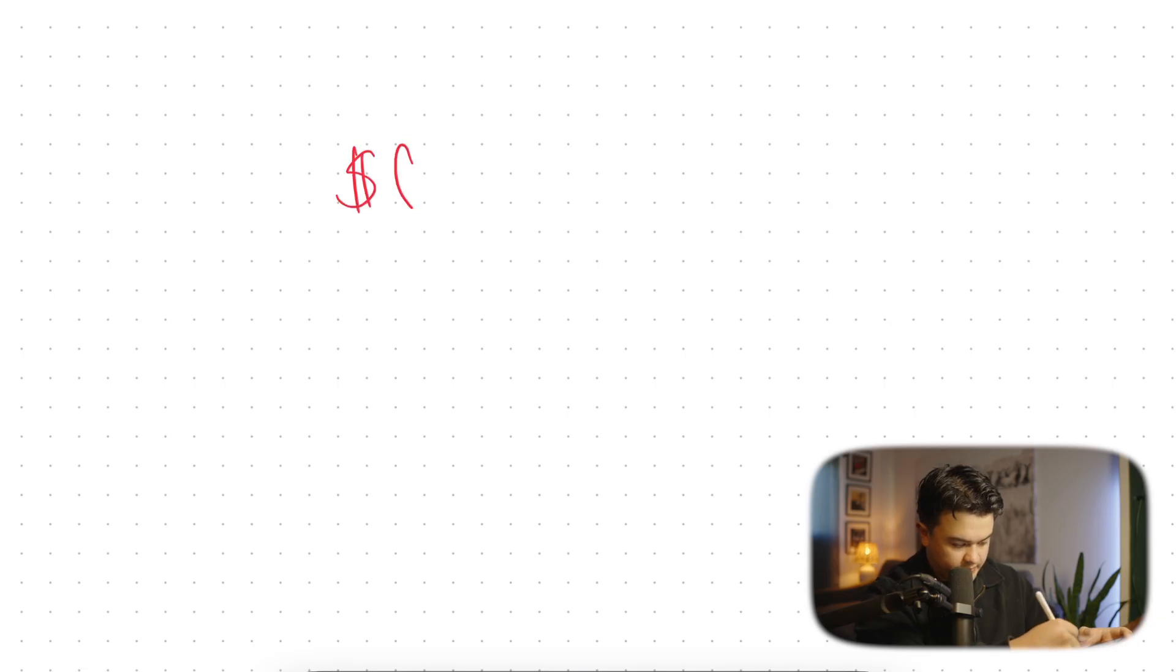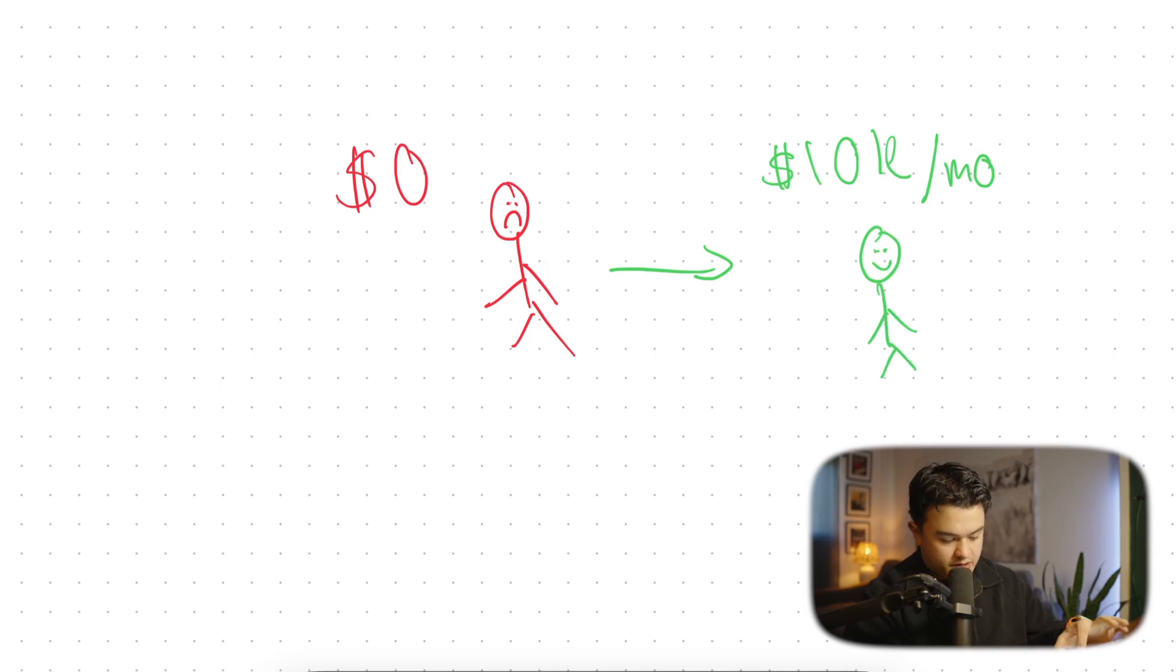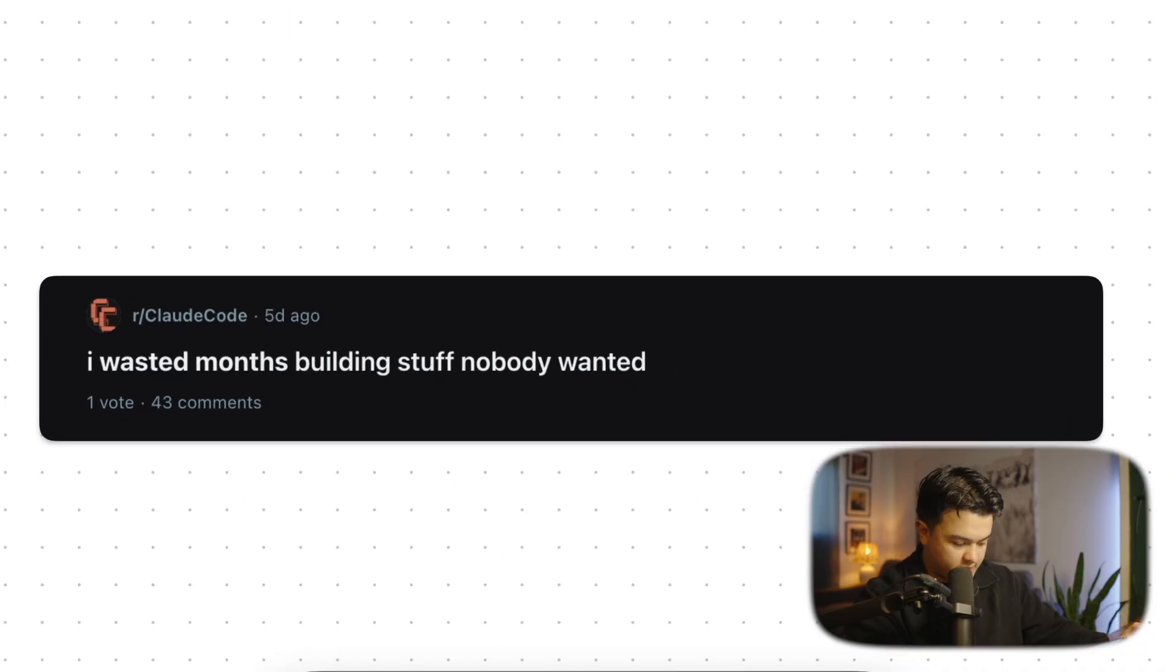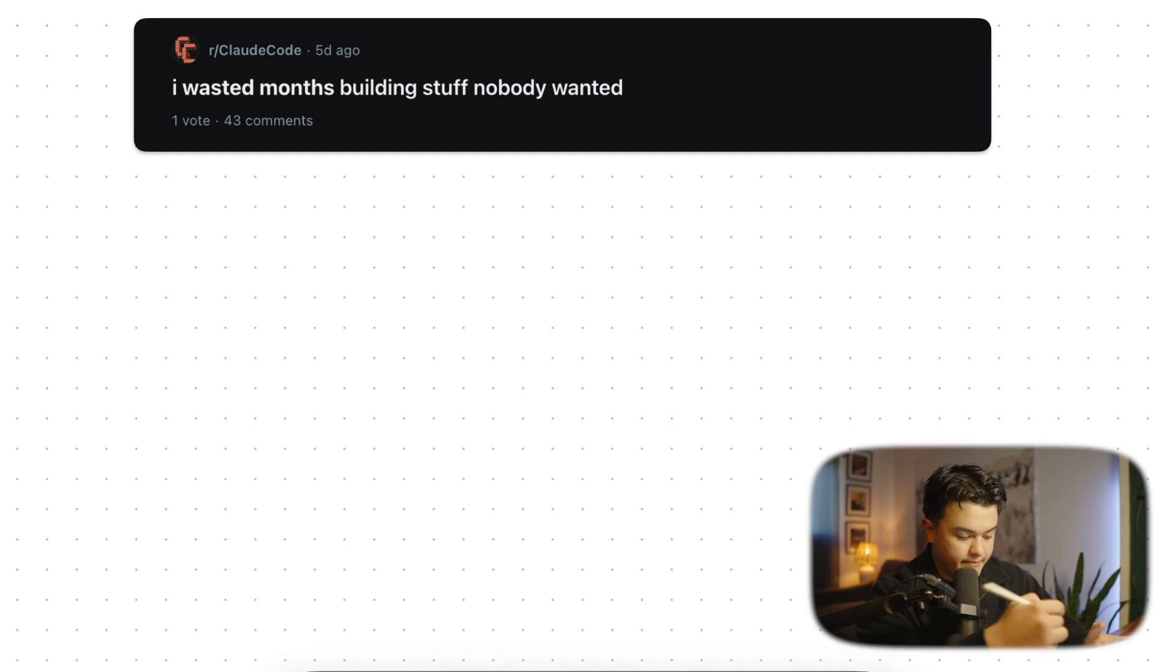This video was really inspired because I saw this post the other day on the Claude Code Reddit. You can tell what the post is about by its title: I wasted months building stuff nobody wanted. A lot of people are stuck in the same boat. Step number one, and the most important step to avoid wasting months building things that nobody wants, is to simply find a problem.